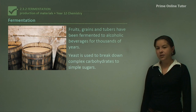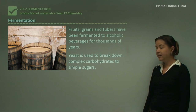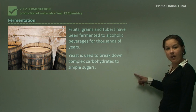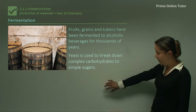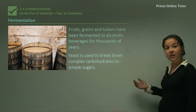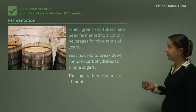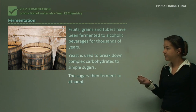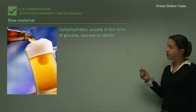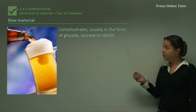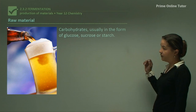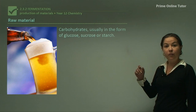Yeast is used to break down complex carbohydrates into simple sugars. Long molecules of carbohydrates can be broken down into smaller sugars and then used to ferment into ethanol. Carbohydrates, usually in the form of glucose, sucrose or starch, are used and they are the starting raw material for making the ethanol.